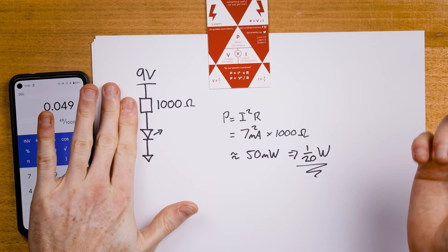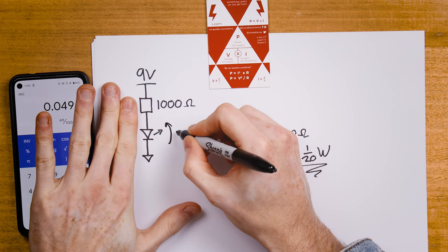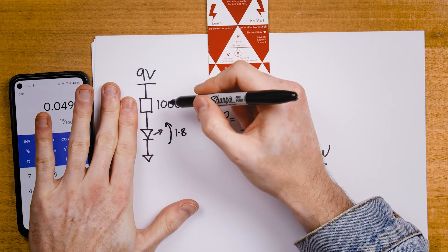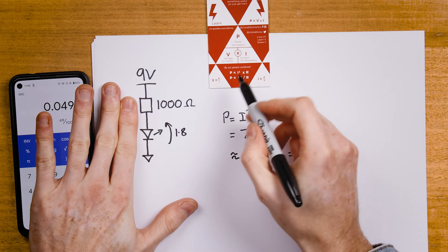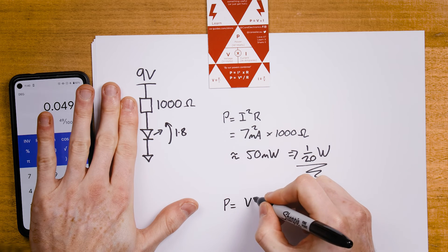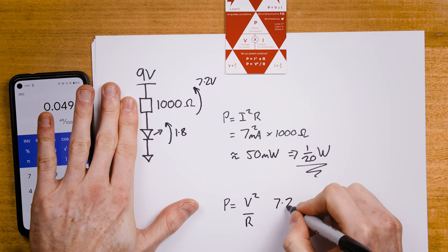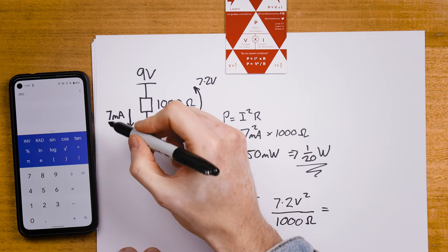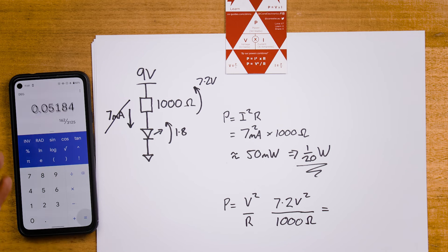We actually calculated this current using Ohm's law first, but if we didn't know the current we could get there from just knowing the voltage. With 7.2 volts across the resistor we can also use P equals V squared on R — that's 7.2 squared divided by 1000 — and we get to the same figure, about 50 milliwatts. These extended formulas are really useful for calculating power without first going through Ohm's law. So there you have it — practical examples using Ohm's law and power formulas. We specified a resistor for our LED to avoid damage, and confirmed our linear regulator wouldn't dissipate too much power. Until next time, thanks for watching.